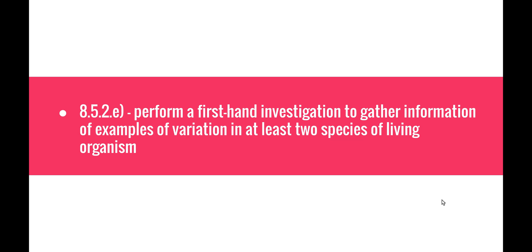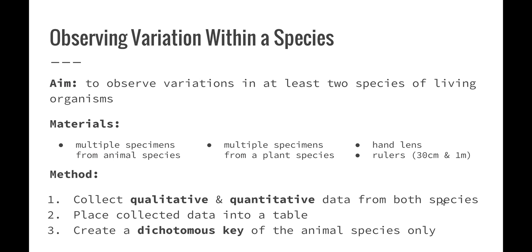We also need to perform a first-hand investigation to gather information about examples of variation in at least two species of living organisms. The aim is to observe variations in at least two species. Materials include multiple specimens from an animal species — in this case, humans — multiple specimens from a plant species, a hand lens, and rulers for quantitative measurements. The method involves collecting qualitative and quantitative data from both species, placing collected data into a table, and using skills from the classification section to create a dichotomous key of the animal species only.